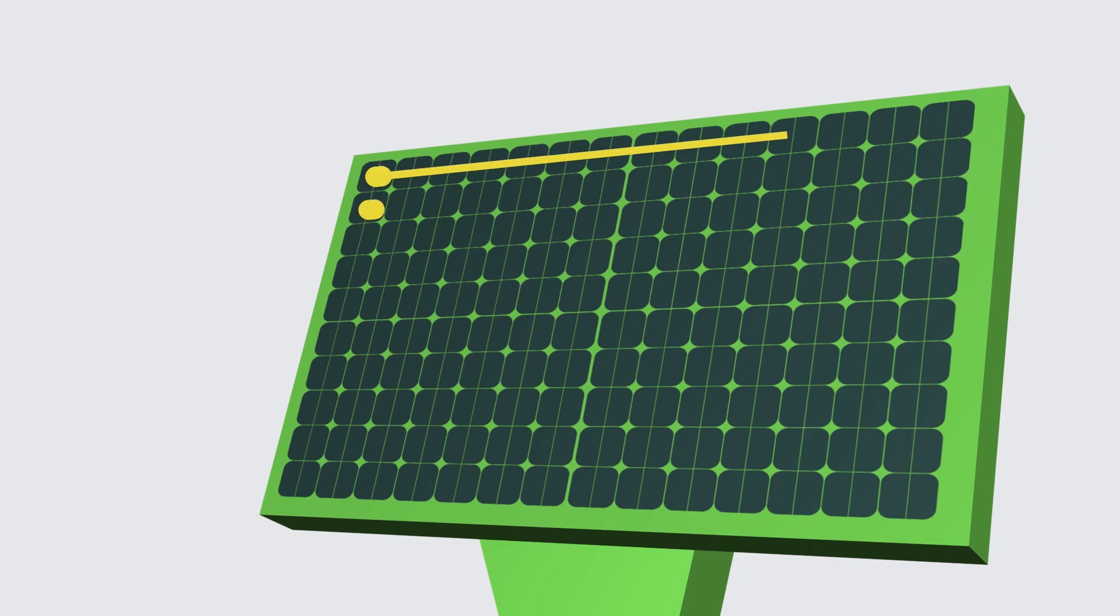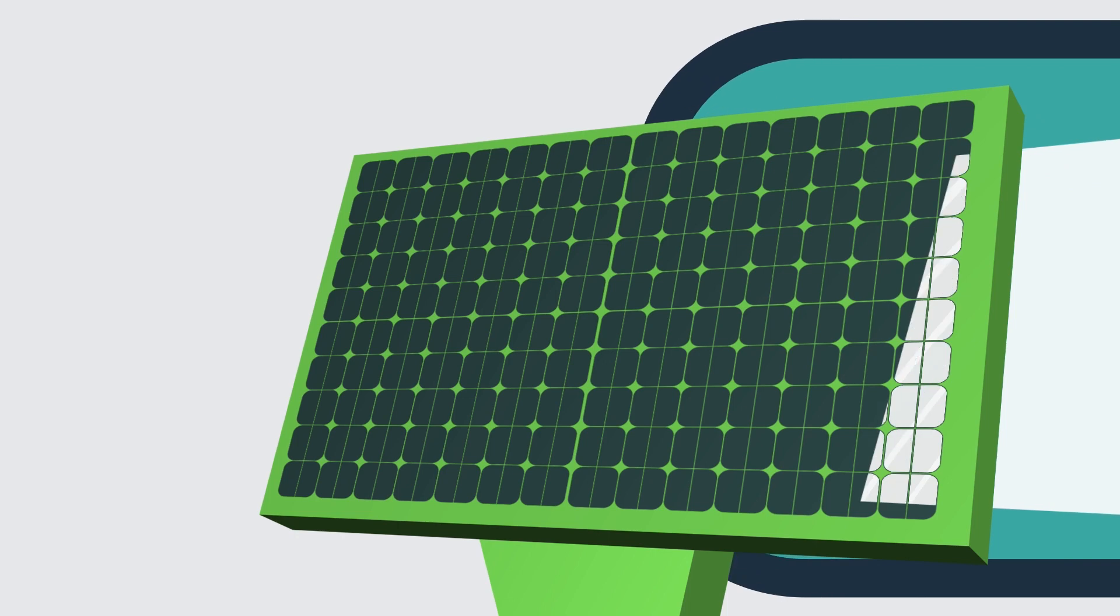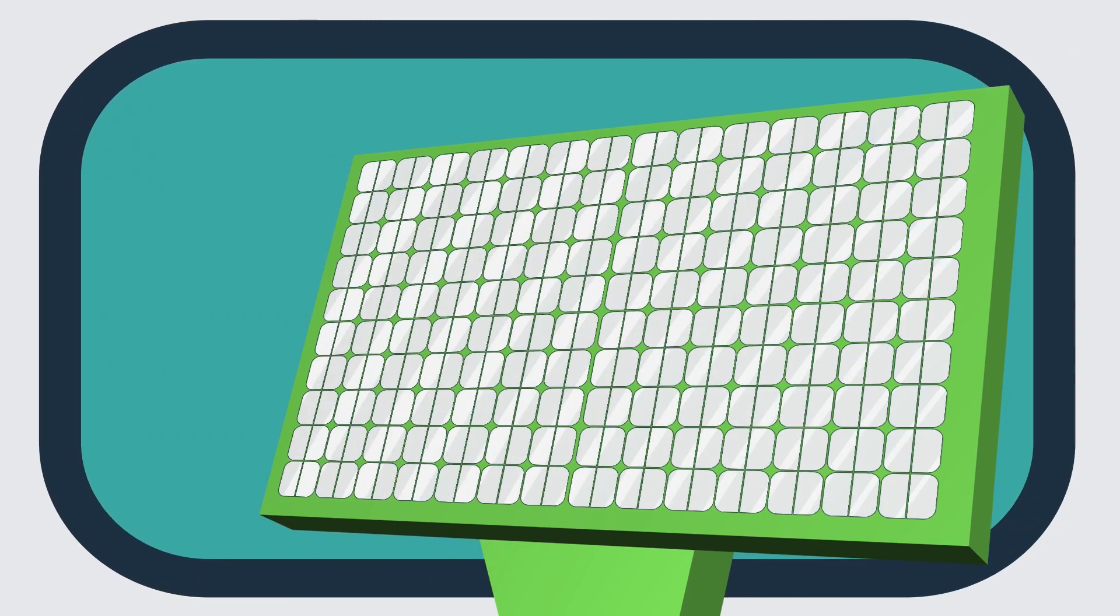The second is the power test. The output current, voltage, power, etc. of the components will be tested and form a label information, and the staff will stick them on the backboard for distinction. Finally, the second EI test and visual inspection are carried out to minimize the detection error.